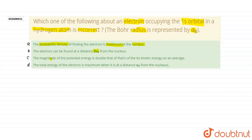And option C, the magnitude of the potential energy is double that of its kinetic energy on an average. And option D, the total energy of the electron is maximum when it is at a distance A0 from the nucleus.